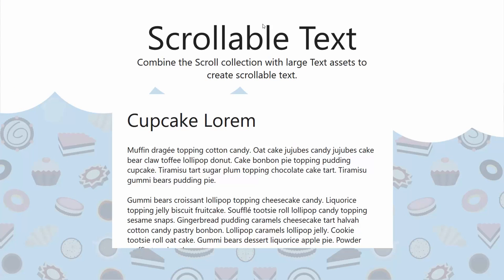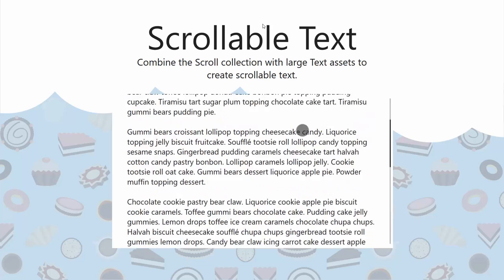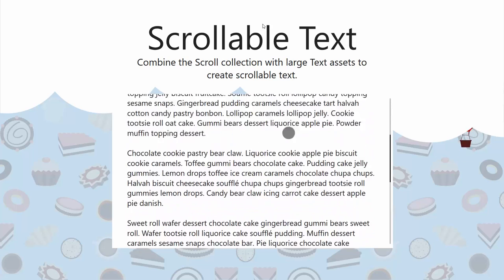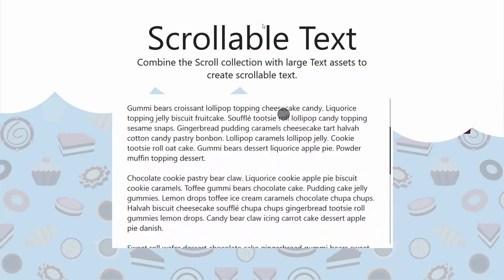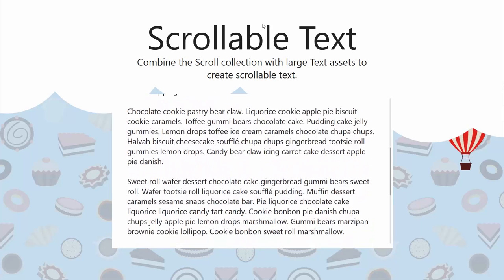Another example is scrollable text — we get asked about this a lot. If I have a lot of text that's larger than the window within which it's visible, can I enable people to scroll it? With the scroll collection, it's a piece of cake. You just take your text asset, put it inside a scroll collection whose window is smaller than the text asset, and let people swipe their way through it. Much easier now with the scroll collection.